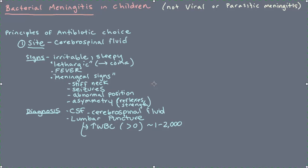A glucose concentration is also measured when the fluid is sent to the lab. With bacterial meningitis, the glucose in the spinal fluid tends to be low — less than 40 — because with meningitis you have an abnormal penetrability of the meninges, which are the coverings of the brain, reducing the amount of glucose transported into the spinal fluid. Most importantly, the fluid is examined with something called a gram stain — spelled with a capital G, named after Dr. Gram — which can determine whether or not bacteria are present by staining them.